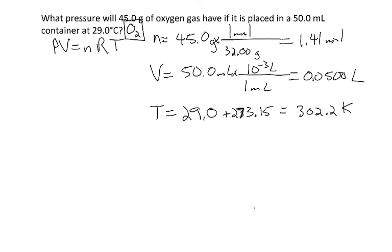So now I'm ready to go ahead and plug things into the ideal gas law. I like to rearrange the equation first before I plug the numbers in. So I want to solve for P. So I'll divide both sides by the volume. So the equation that I need to solve is P is equal to nRT over V.